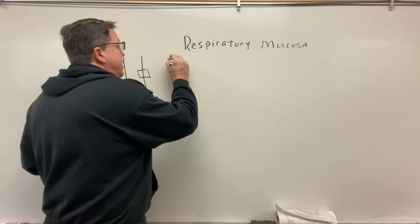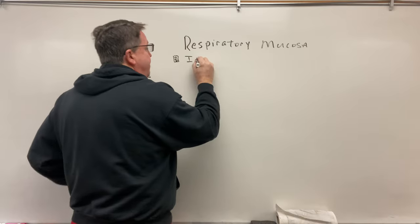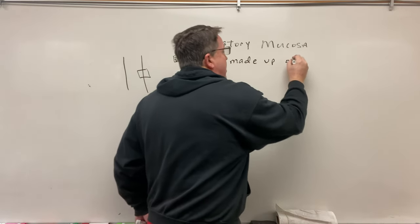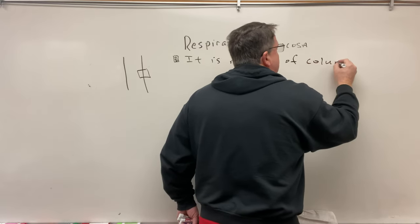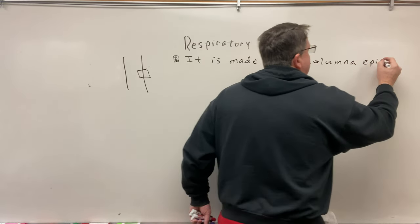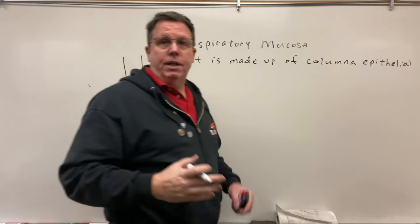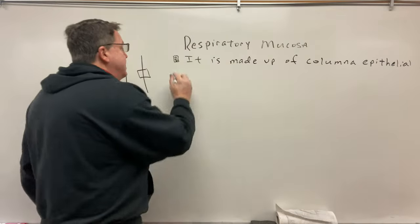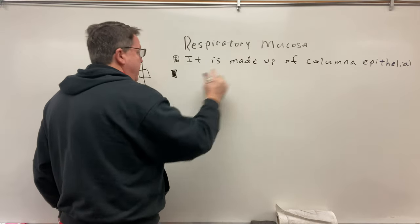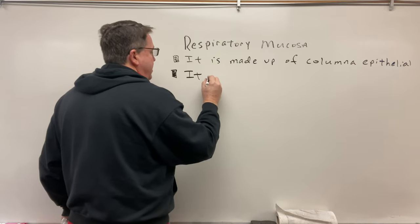So under respiratory mucosa, the first thing about it is it is made up of columnar epithelium. Columnar epithelium is basically epithelial cells that are tall and thin — they're shaped like a column. The second thing is between the columnar epithelium we have goblet cells, so it contains goblet cells.